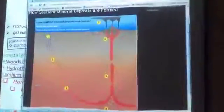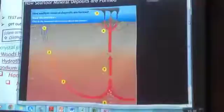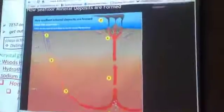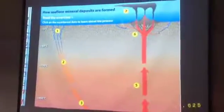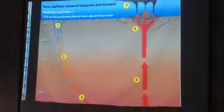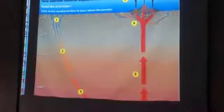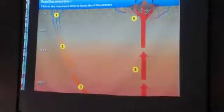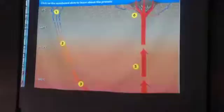Minerals that form through precipitation most often form at the bottom of an ocean. What happens here is there are cracks in the rocks at the bottom of the ocean.